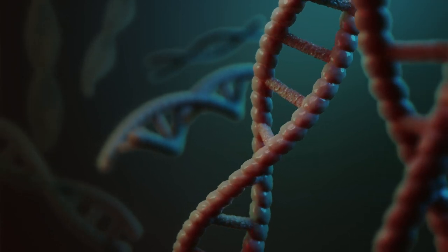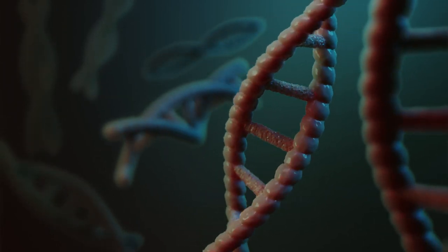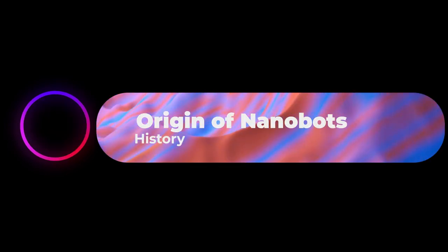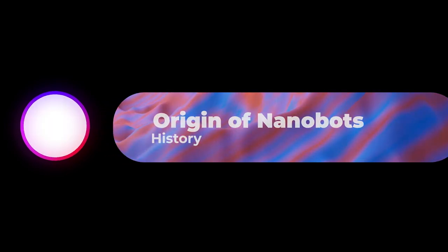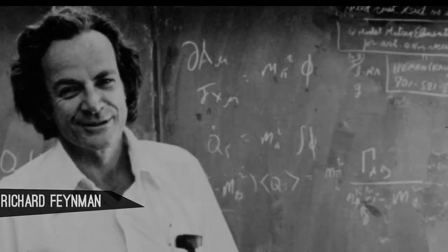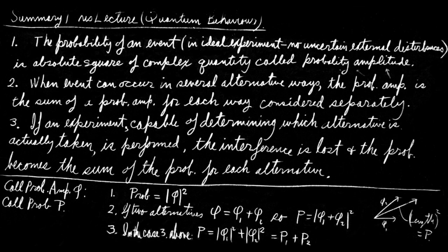Before we get into the details of nanobots, let's have a look at their origin. The idea of nanobots is entirely attributed to Richard Phillips Feynman, an American theoretical physicist and scientist in the Manhattan Project, who is known for his work in the path integral formulation of quantum mechanics and the theory of quantum electrodynamics. He earned the Nobel Prize for his work in the development of quantum electrodynamics.